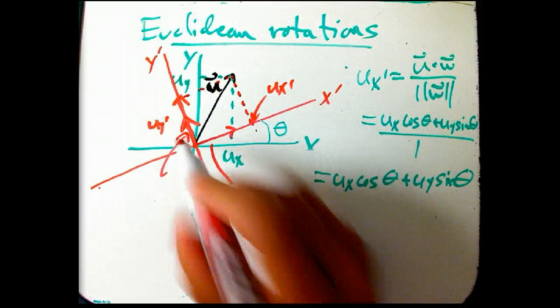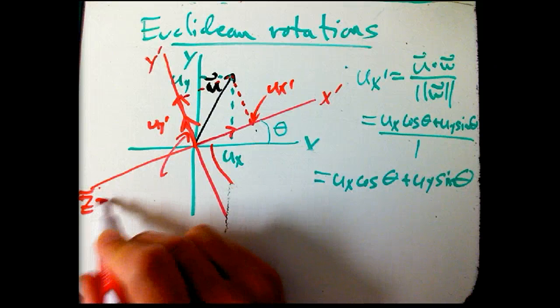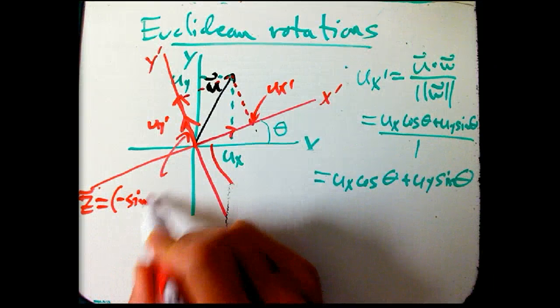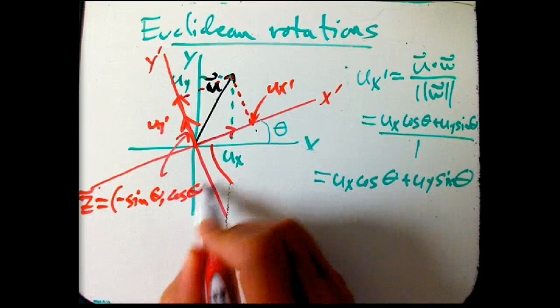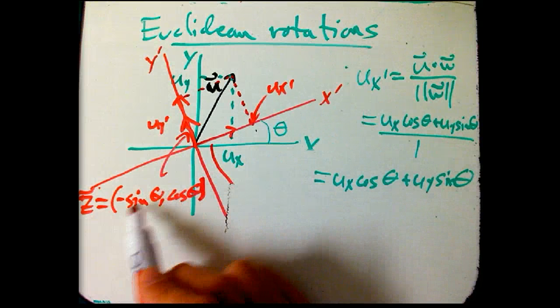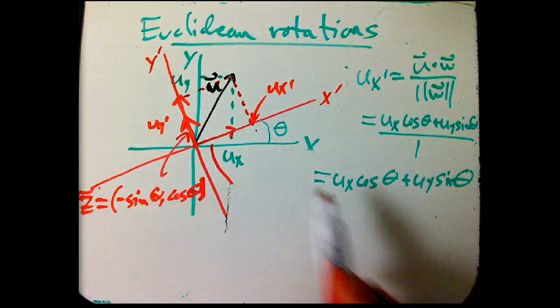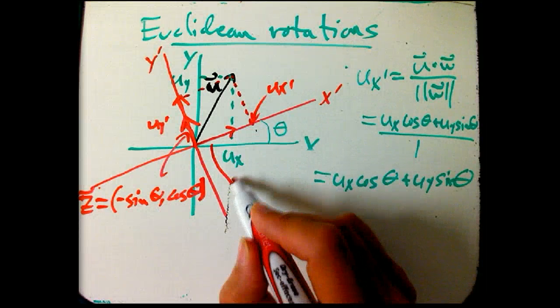Well, we can use the trick, let's call that vector Z, because we're running out of letters, that's going to be minus sine theta, cosine theta. Just a standard trick in Euclidean geometry, switch them and flip a sign. This is clearly a unit vector, it's easy to see that it's perpendicular to W here.